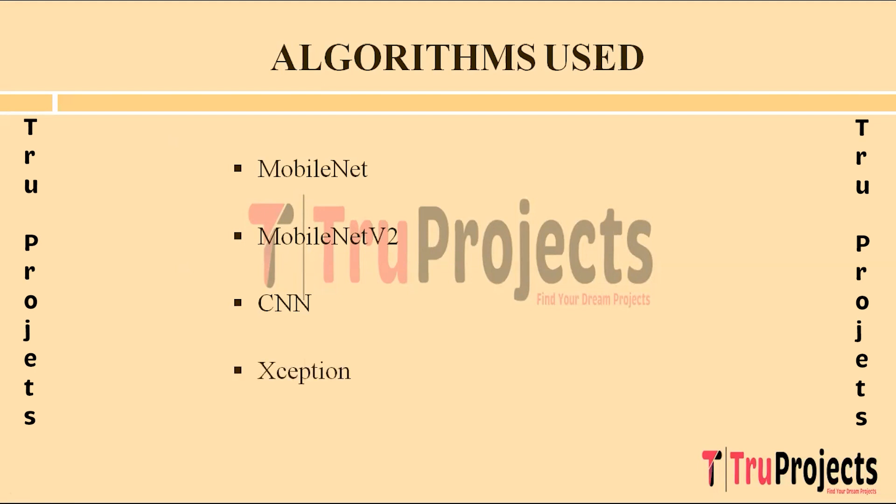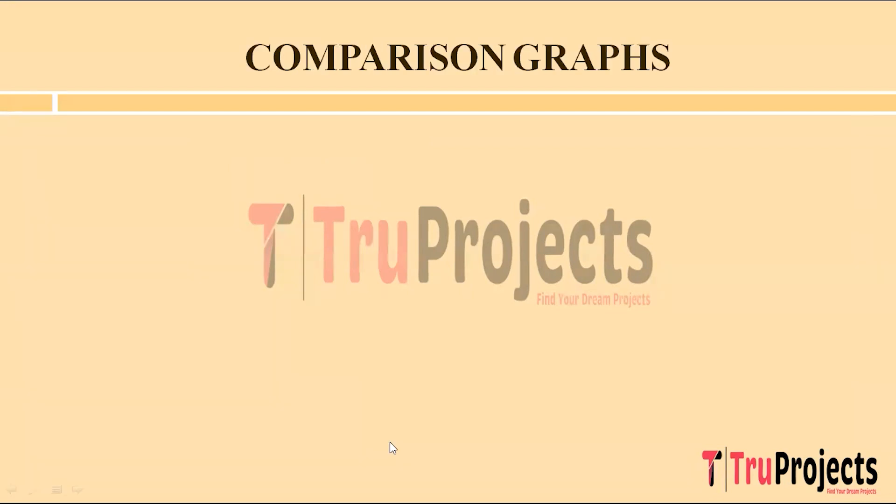The next algorithm built is Xception. Xception is an advanced deep learning architecture based on the concept of depthwise separable convolutions, aiming to enhance model efficiency and performance. It divides convolutional filters into depthwise and pointwise convolutions, allowing for more efficient feature extraction. In this herbal species identification project, Xception's complex architecture enables effective learning of intricate patterns and features from herbal images, leading to improved accuracy and robustness in classification tasks.